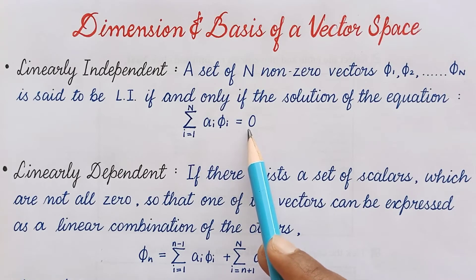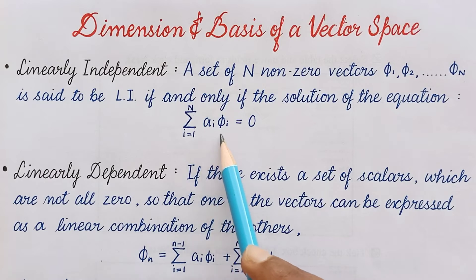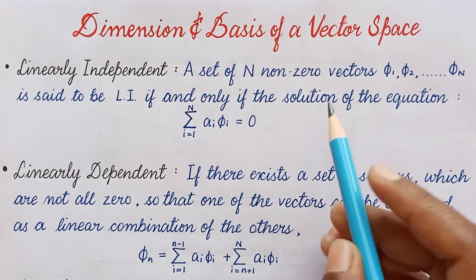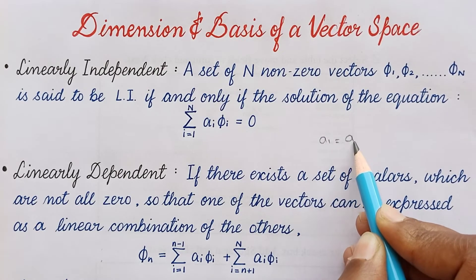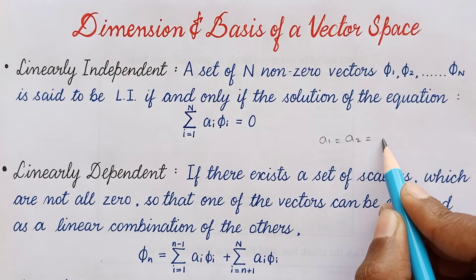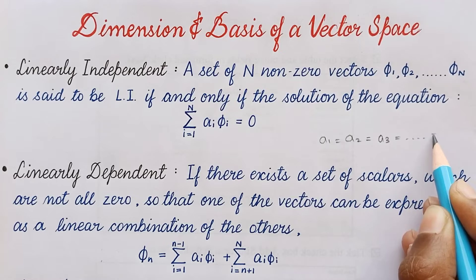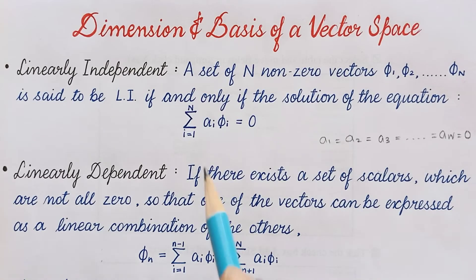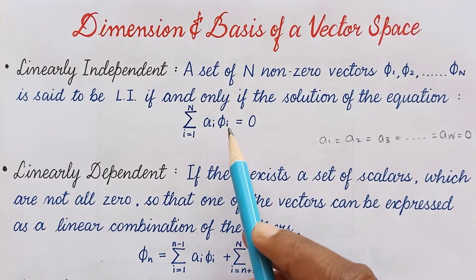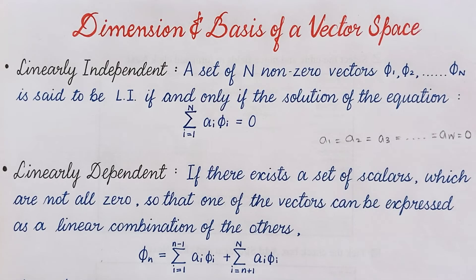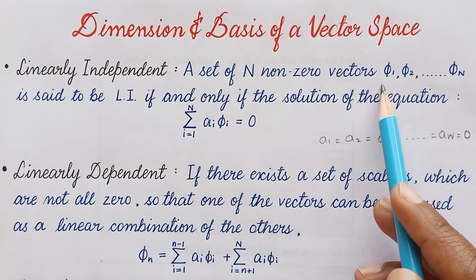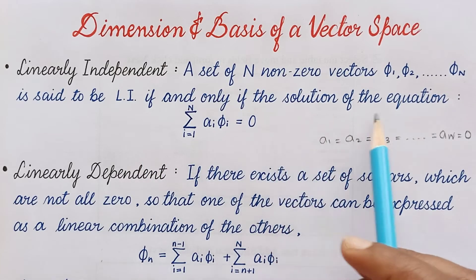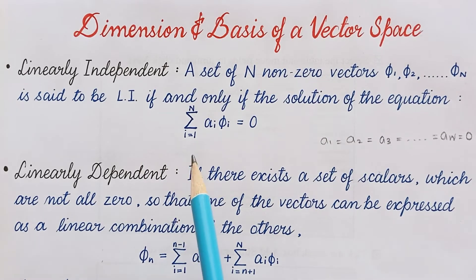Since the vectors are nonzero, the only condition under which the term aᵢφᵢ can equal zero is when all the scalars aᵢ are zero — that is, a1 = a2 = a3 = ... = an = 0. So a set of n nonzero vectors φ1, φ2 till φn is said to be linearly independent if and only if the solution is 0.